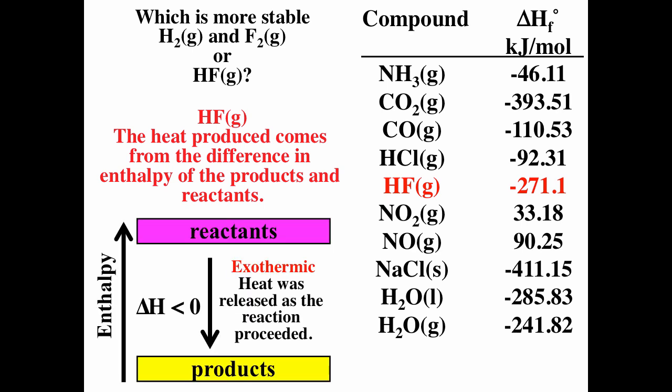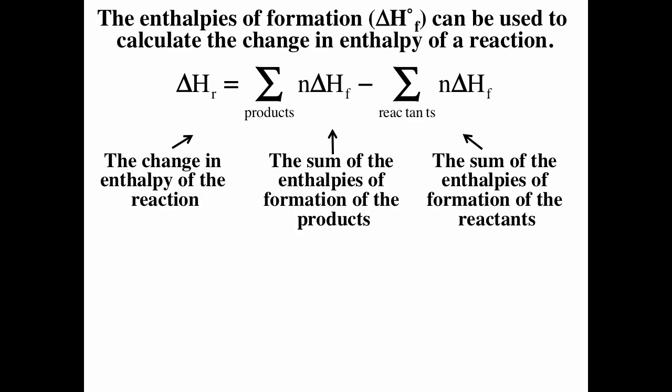For an exothermic reaction, reactants have a higher enthalpy than products, and the heat produced equals the change in enthalpy from reactants to products. We can use enthalpies of formation to calculate the change in enthalpy for any reaction by taking the sum of the enthalpies of formation of the products minus the sum of the enthalpies of formation of the reactants. The capital sigma stands for sum, and you must multiply each enthalpy of formation by its stoichiometric coefficient.